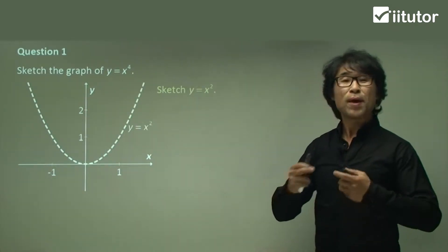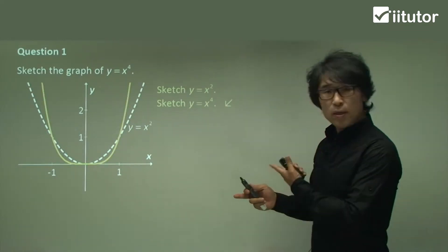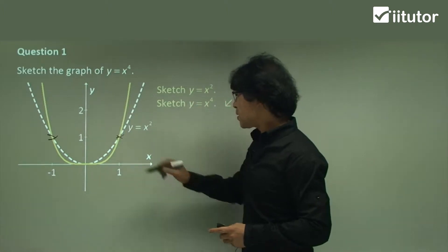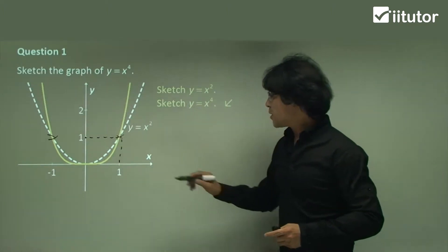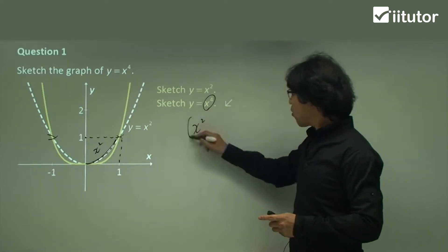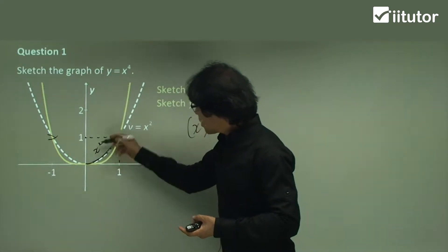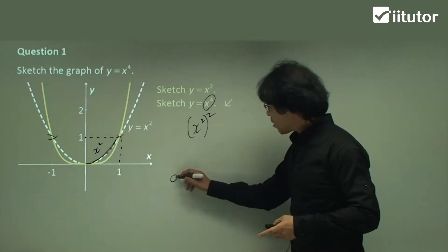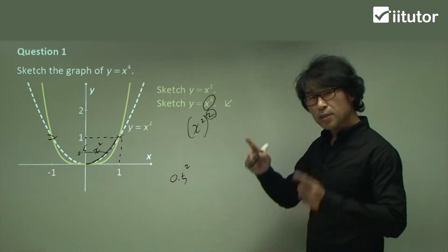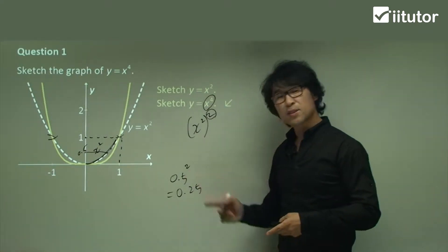That's y equals x squared graph, which is a very basic parabola. For x to the power of 4, you need to understand: look at the graph and see the intersect — the intersect is at 1. These values are x squared, and this is obtained by squaring x squared. So we need to understand how x to the power of 4 is made. These values are below 1. Say for example, 0.5 — that value will be 0.5. If you square it to make x to the power of 4, what do you think the value becomes?